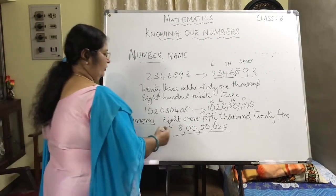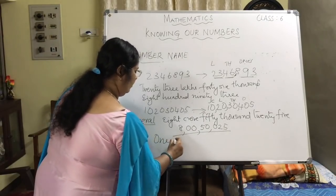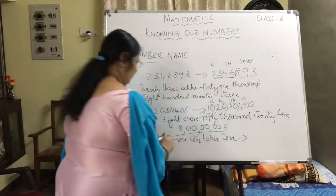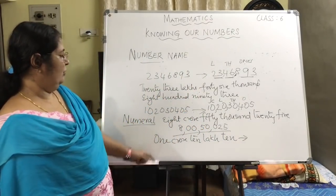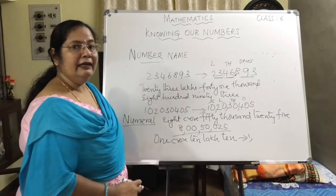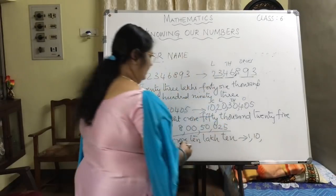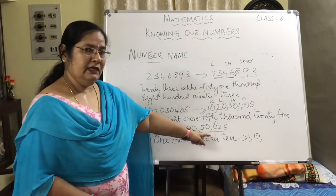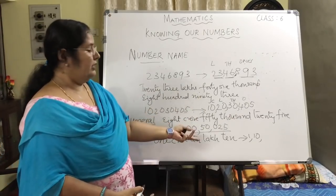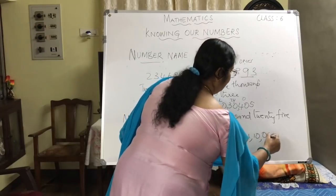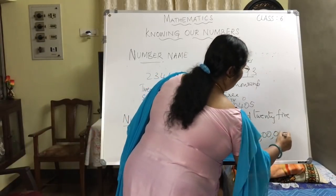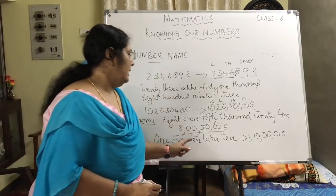One more example: 1 crore 10 lakh 10. In the crores period you have 1. In the lakhs period you have 10 lakh, so it is 10. Again, only 10 is there which means the thousands period is missing — 2 places — so put 00. Then 10 means the hundreds place has nothing, so 0, 1, 0. The numeral is 1,10,00,010.